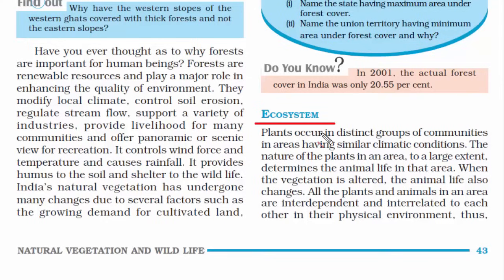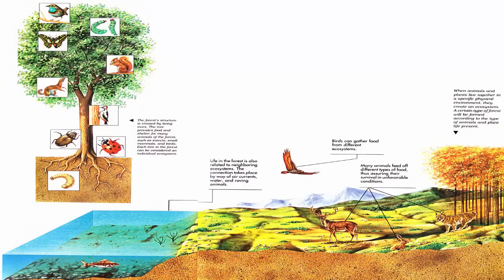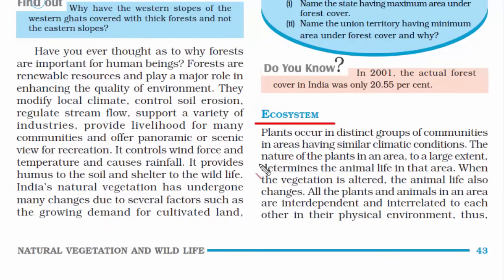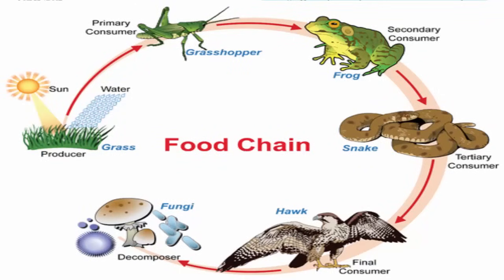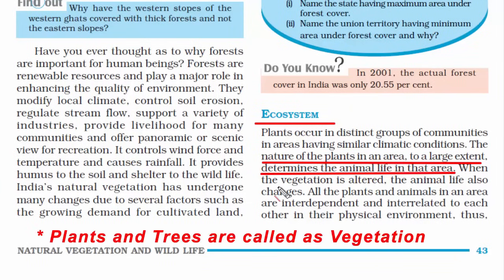An ecosystem is a community in which many different organisms interact with their physical environment — it is a complex, interconnected network. The nature of plants in an area largely determines the animal life in that area. In a forest food chain, small insects and bugs rely on plants; herbivores like rabbits and goats also eat plants. These animals are then eaten by bigger animals. When animals die, fungi break down their bodies into nutrients, which, with sunlight and water, help grow trees and plants again. This entire ecosystem is based on vegetation.